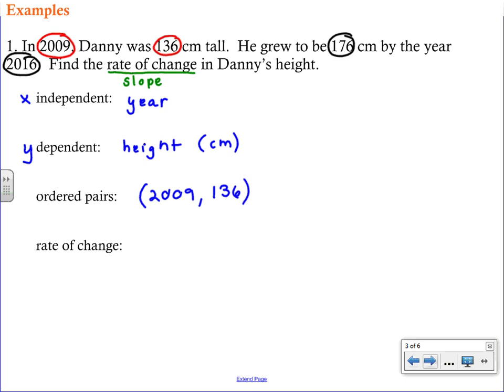So that's my first ordered pair. The second ordered pair is going to come from what I circled in black. And you have to be careful. Don't just take the order that they appear in the problem. Make sure you think about the independent and dependent variable. The year is the independent. So that goes first. And the height is the dependent. So that has to go second. Once you have your two ordered pairs, it should seem like a familiar process to figure out the rate of change, which like I said, is just slope.